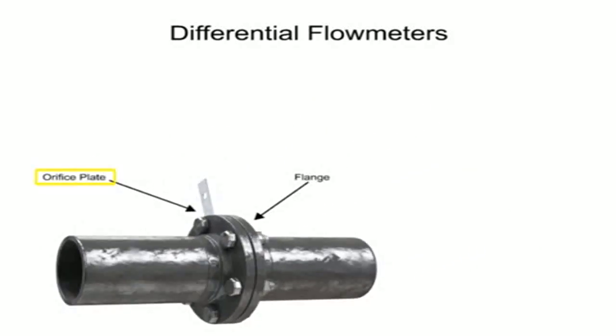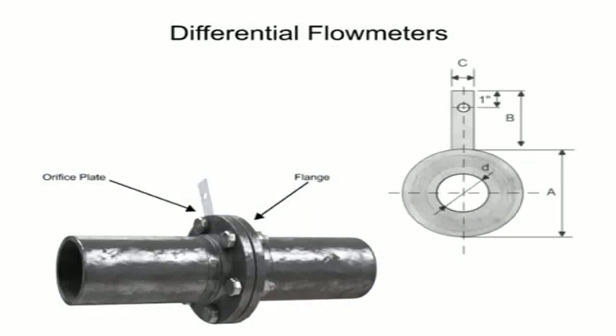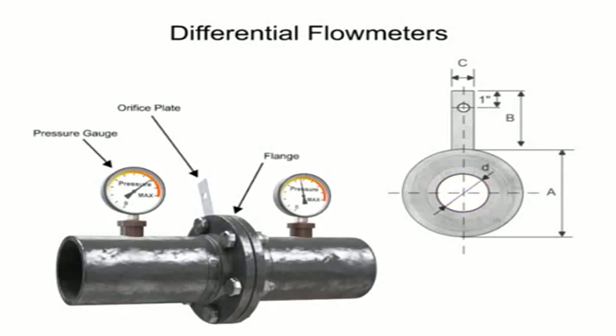The orifice plate of the flow meter is comprised of a circular metal disc with a specific hole diameter that reduces the fluid flow in the pipe. Pressure taps are added on each side of the orifice plate to measure the pressure differential.